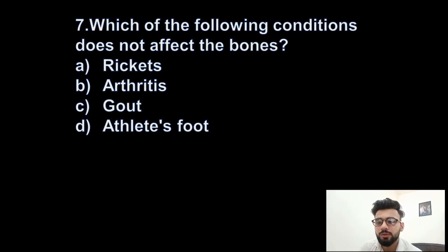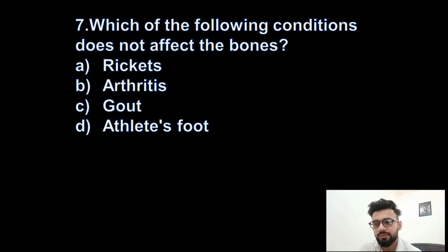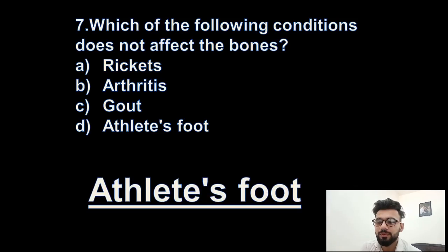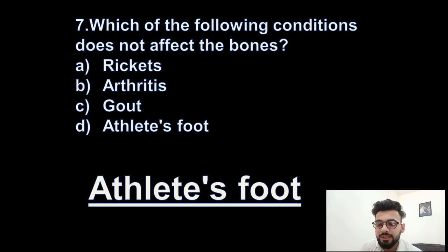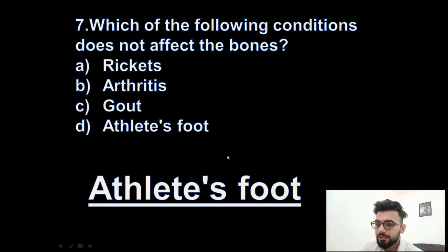Question 7: Which of the following conditions does not affect the bones? The bones of the body are not affected at all — another part might be affected, but not the bones. Options: Rickets, Arthritis, Gout, or Athlete's Foot? The answer is Athlete's Foot. Despite the name having 'foot', it does not involve the bones at all.